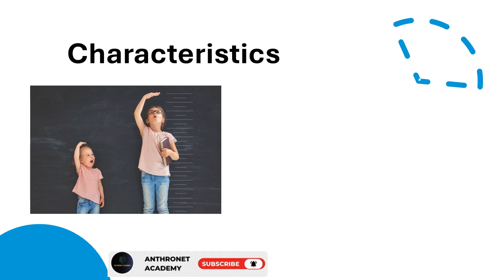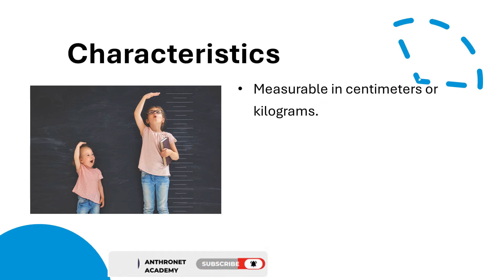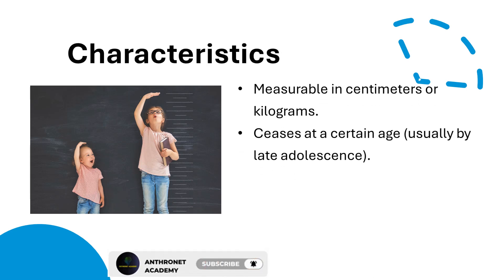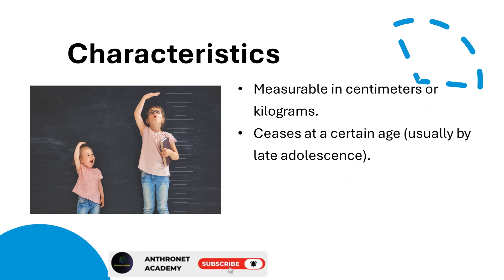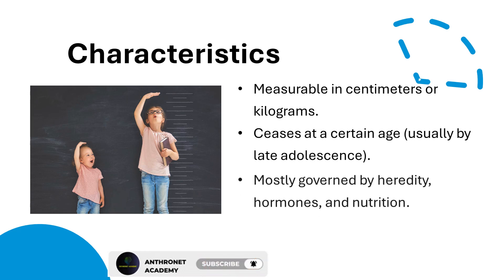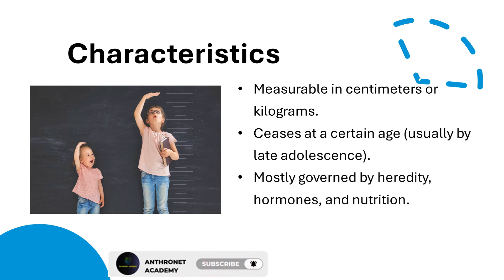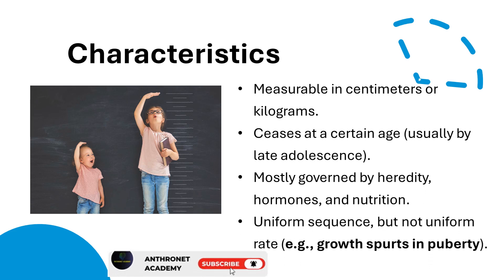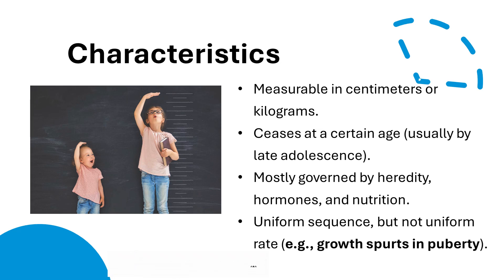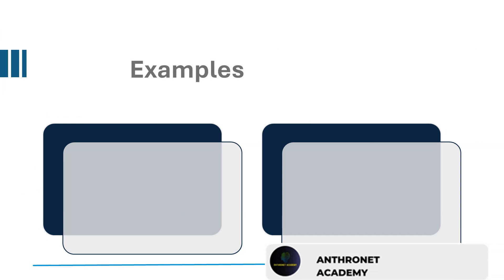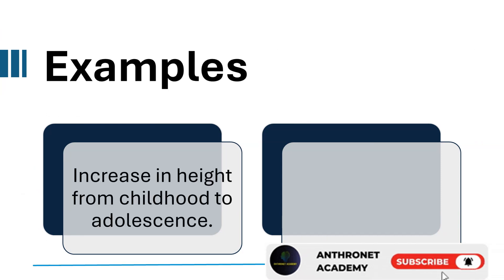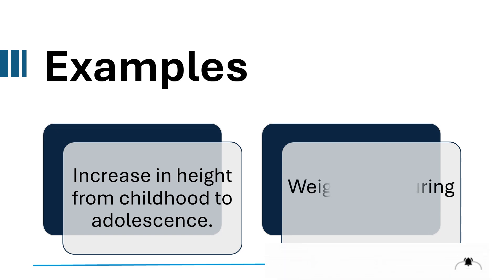Characteristics of human growth: measurable in centimeters or kilograms; ceases at a certain age, usually by late adolescence; mostly governed by heredity, hormones, and nutrition; uniform sequence but not uniform rate, e.g., growth spurts in puberty. Examples include increase in height from childhood to adolescence, and weight gain during infancy.